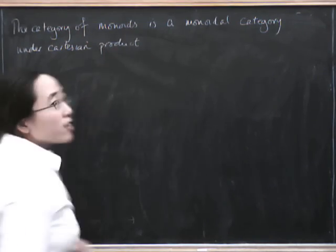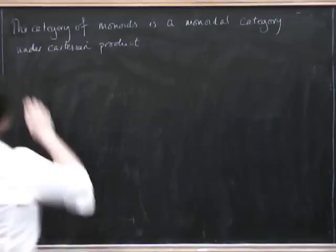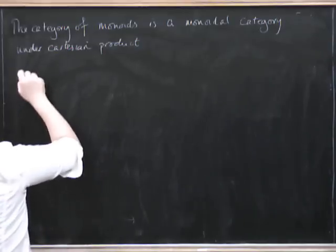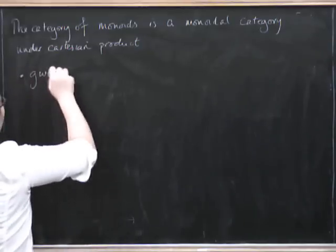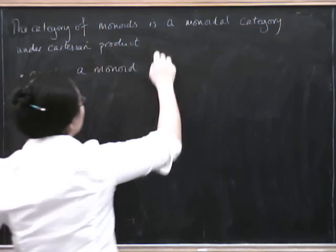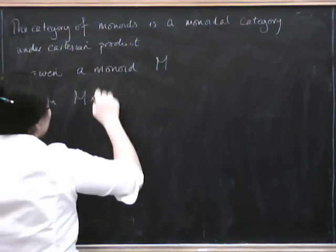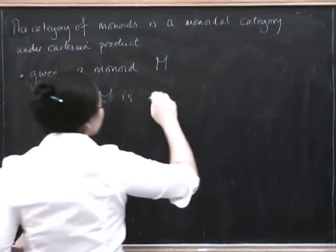Which is to say that if we give a monoid M, then M cross M is also a monoid.